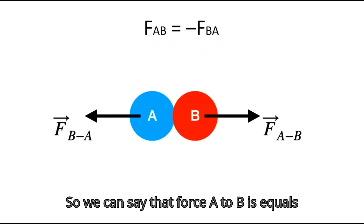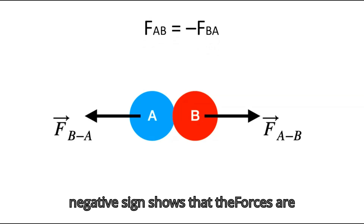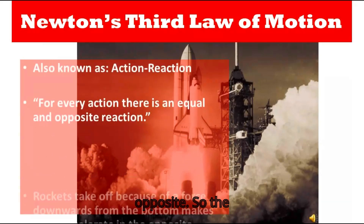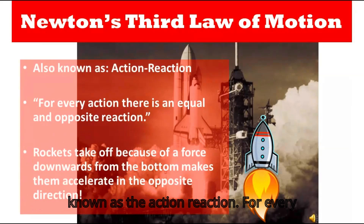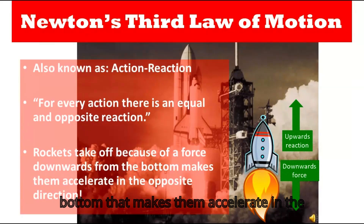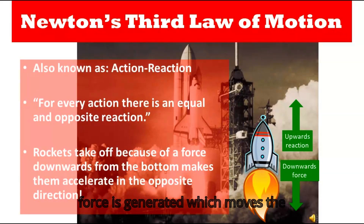We can express this as: force A on B equals negative force B on A, where the negative sign shows the forces are equal in magnitude but opposite in direction. Rockets take off because of a downward force from the bottom — this action generates an equal and opposite reaction force that moves the rocket upward.